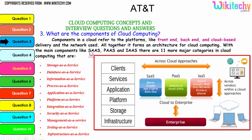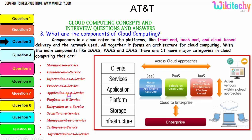The main components are Software as a Service, Platform as a Service, and Infrastructure as a Service. There are 11 major categories in cloud: storage as a service, database as a service, information as a service, process as a service, application platform, integration, security, management, testing, and finally infrastructure. These are all additional services associated with the three major services to form cloud computing.